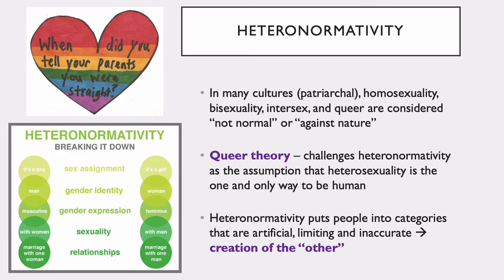When it comes to heteronormativity, what we mean is that in many patriarchal cultures, homosexuality, bisexuality, intersex, and queer are considered to be not normal or against nature. Queer theory therefore challenges heteronormativity as the assumption that heterosexuality is the one and only way to be human, because we know this is absolutely not true. Heteronormativity puts people into categories that are artificial, limiting, and very often inaccurate. In this way, we're creating the other — harkening back to concepts of inside or outside, emic versus etic perspectives, us versus them. If you're artificially creating an other, there will be other consequences that come from that sort of categorization.